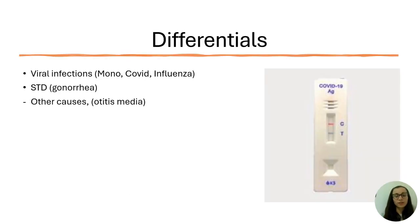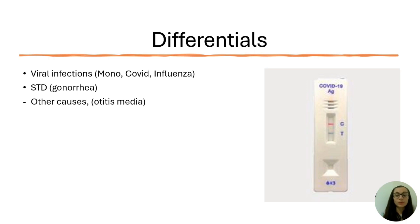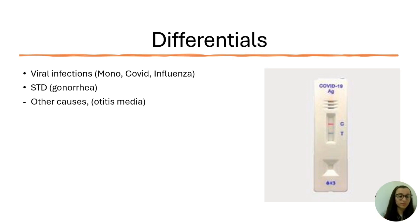In terms of differential diagnoses — other conditions that can mimic strep symptoms — viruses are quite common. COVID, for instance, causes a very sore throat. Mono, if you look in the throat, looks pretty much the same. Influenza can also cause a sore throat. Beyond viruses, there's gonorrhea, which can also present with sore throat, and referred pain — for example, someone with an ear infection whose throat is also hurting. These are some good differentials to keep in mind, though not all-inclusive.